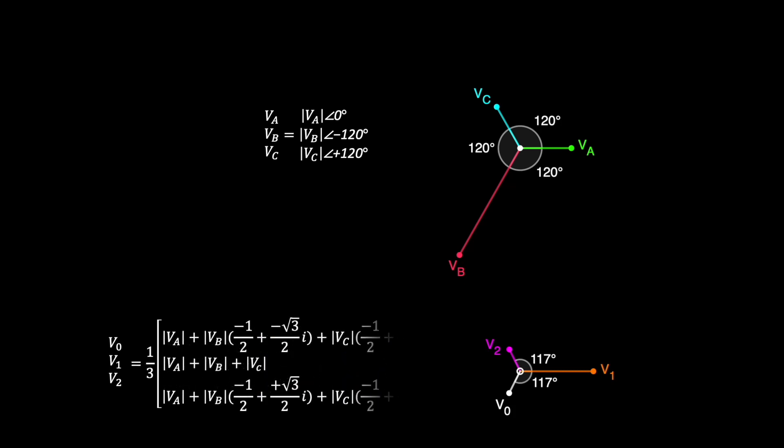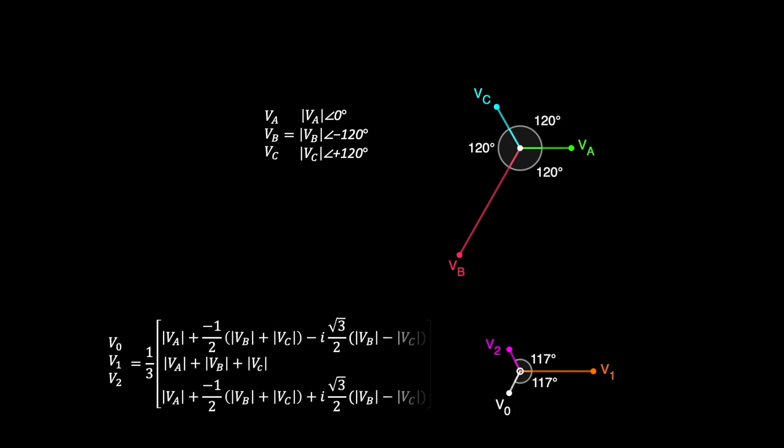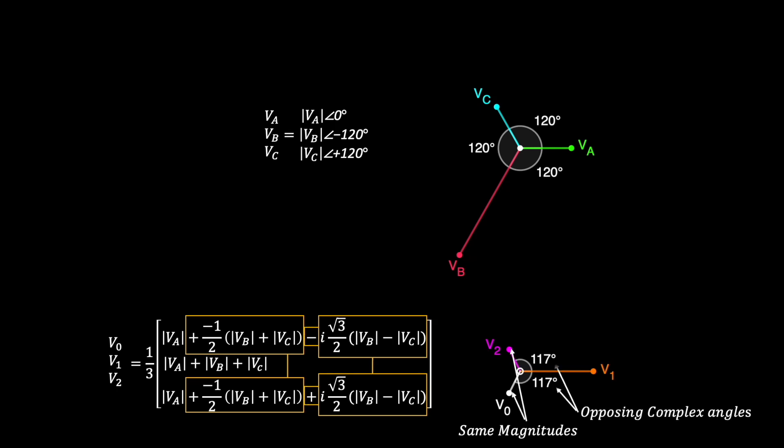And then after doing a little rearranging, I can isolate the imaginary value in the equation. After doing this, the V0 and V2 phasors show the same terms for their real and imaginary components, which means they have the same magnitude. But the imaginary terms have opposite signs, which makes them mirror each other on either side of the positive sequence phasor.